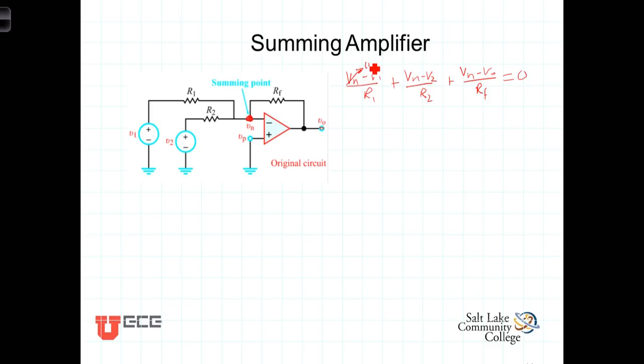Again noting that V sub n equals zero in each of these, we have then negative V1 over R1 plus negative V2 over R2 equals V out over R sub f.